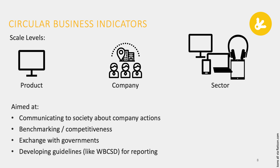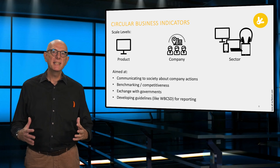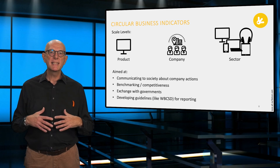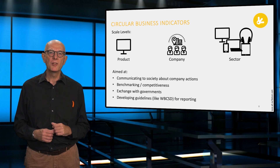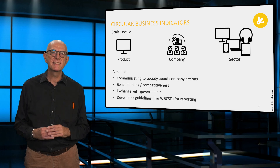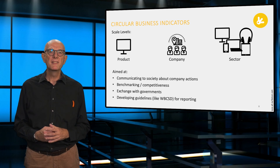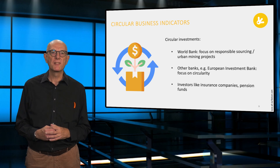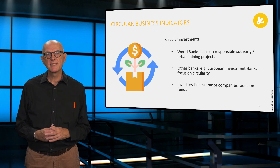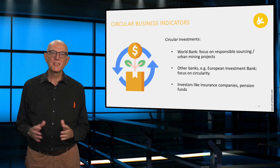Now we can consider business circular indicators. Like governmental indicators, business indicators can be seen across scale levels — here we see the scales of product, company and sector. Business indicators are developed to communicate to society about the business, conduct benchmarking or competitiveness exercises, conduct a dialogue with governments and develop guidelines for reporting or transparency. Business indicators can include how much is spent on circularity projects, and circular investments from banks and other investments. As usual with the private sector, there is more focus on the financial aspects.